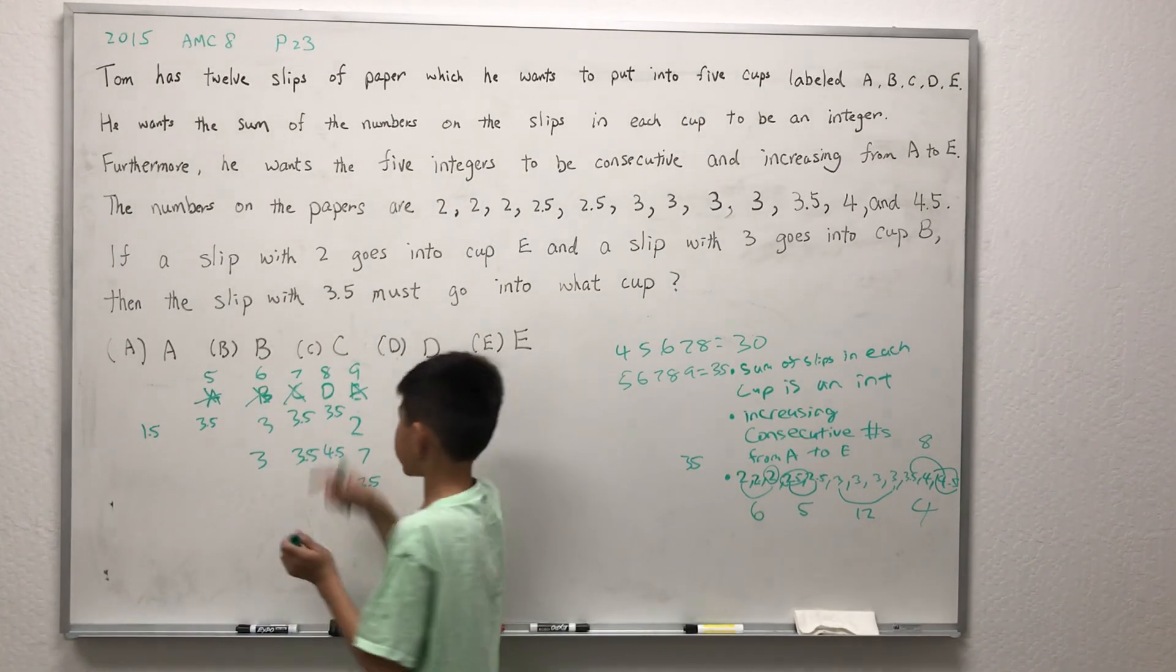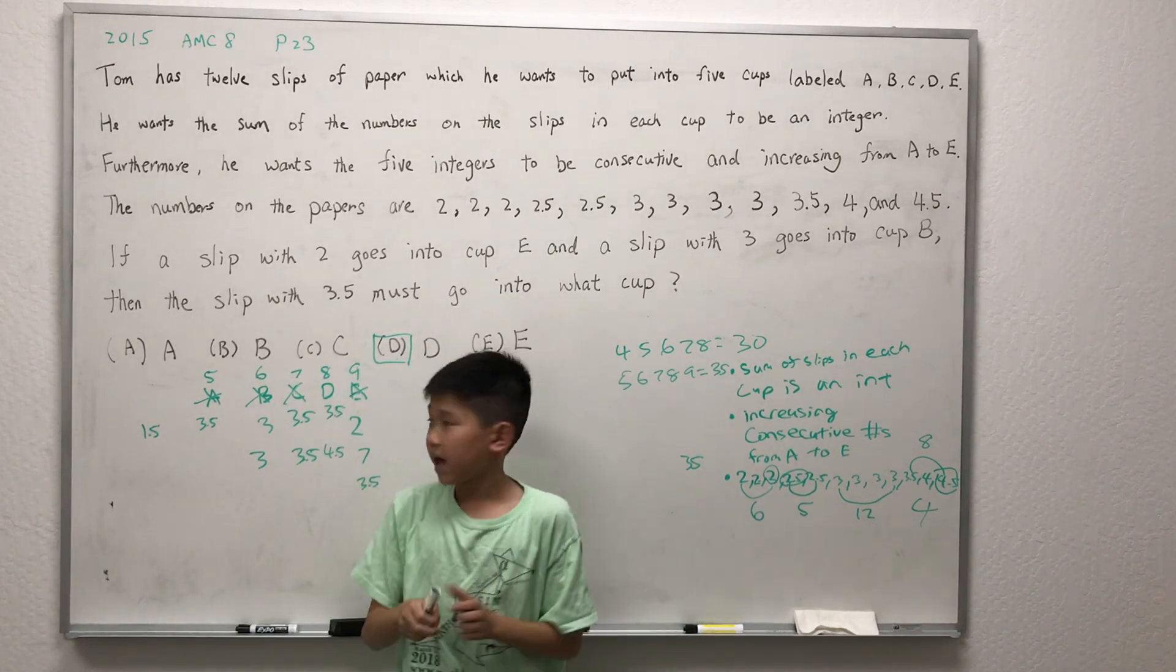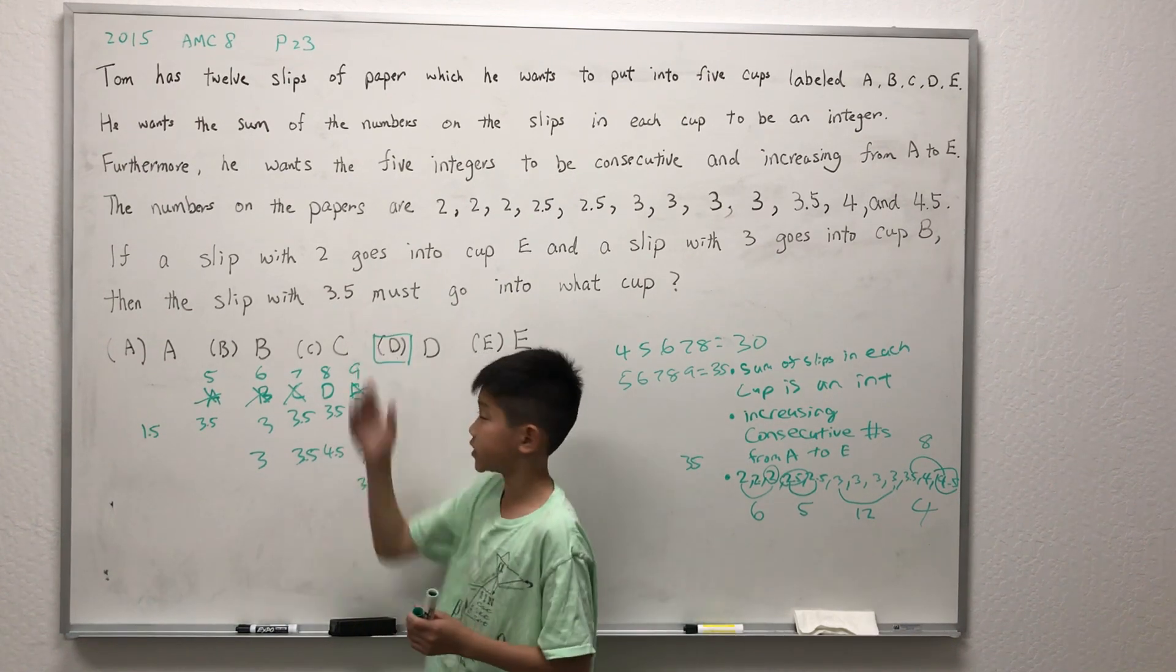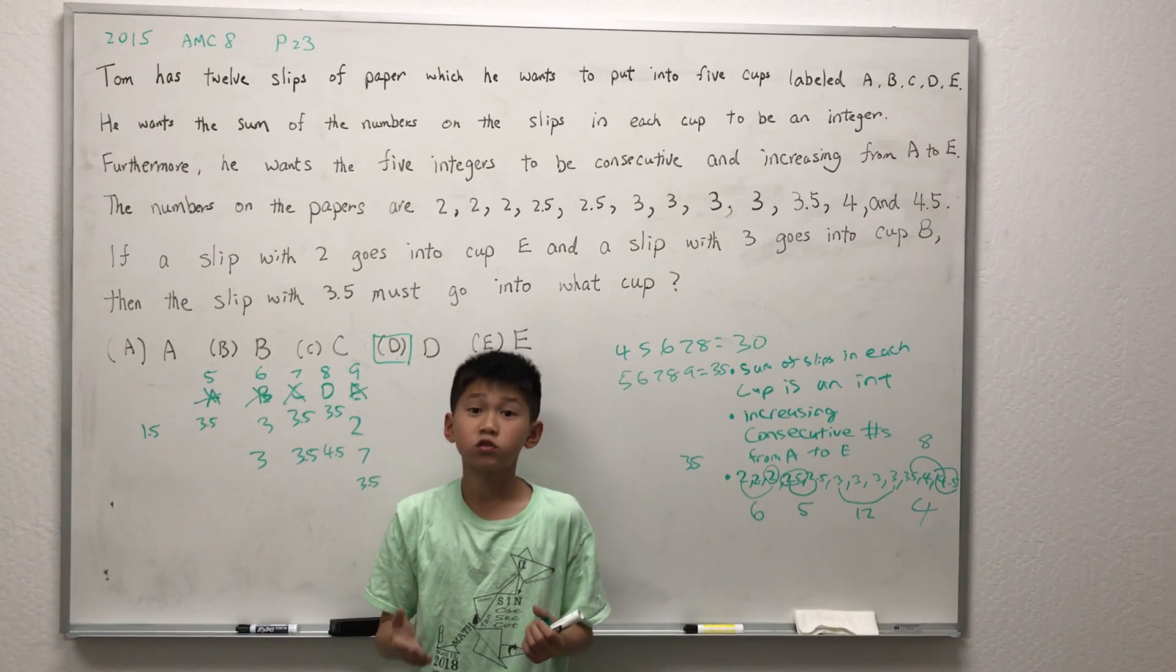This leaves us with answer choice D. Notice that in this problem we didn't actually find out exactly how many slips should go into which cup. Instead, we used the process of elimination to solve this problem.